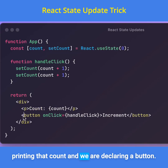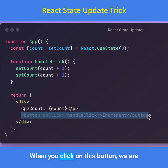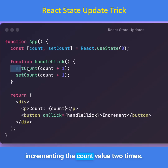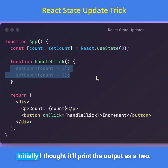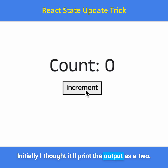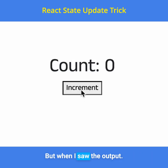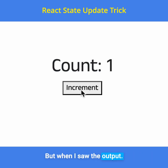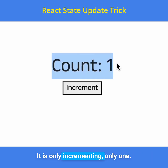We are declaring a button. When we click on this button, we are increasing the count value 2 times. Initially I thought it will print the output as 2, but when I saw the output, it is only incrementing by 1.